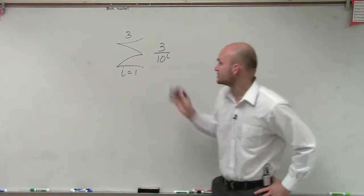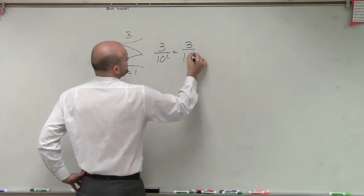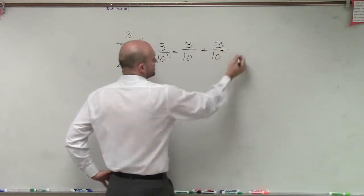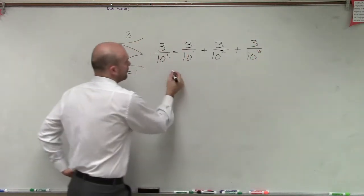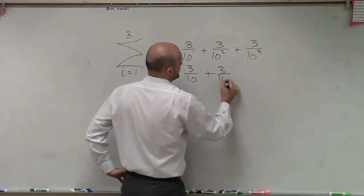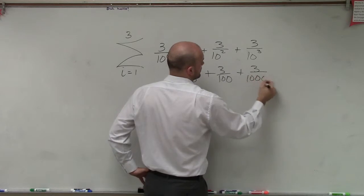Now let's just go and use this. We know that i is equal to 1. So therefore, we're going to do 3 over 10 to the first plus 3 over 10 to the squared plus 3 over 10 cubed. Well, we know this is going to be 3 over 10 plus 3 over 100 plus 3 over 1,000.